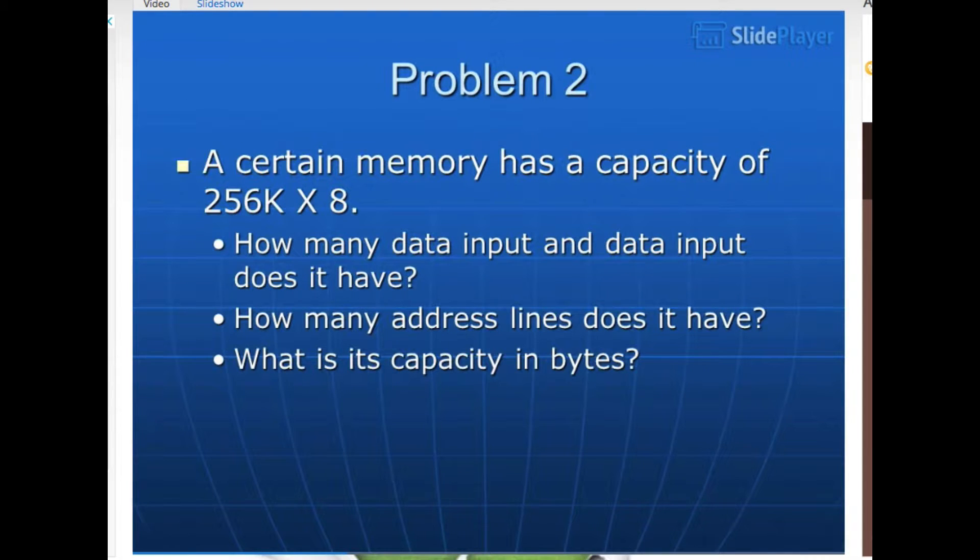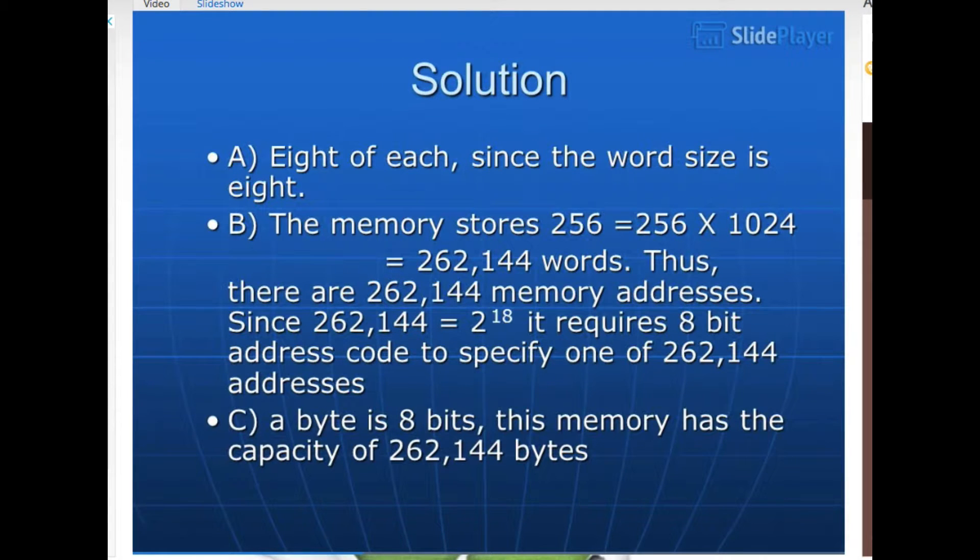Problem 2. A certain memory has a capacity of 256K by 8. How many data input and data output does it have? How many address lines does it have? What is its capacity in bytes? Solution A: 8 of each, since the word size is 8. B: The memory stores 256K equals 256 by 1024 equals 262,144 words. Thus there are 262,144 memory addresses. Since 262,144 equals 2 to the 18, it requires 18-bit address code to specify one of 262,144 addresses. C: A byte is 8 bits. This memory has the capacity of 262,144 bytes.